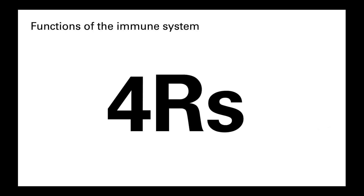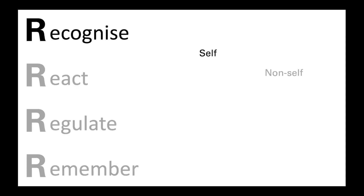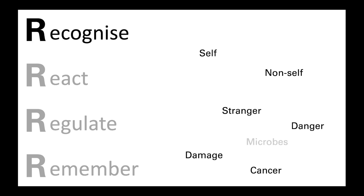The main functions of immune cells can be broadly divided into four distinct outcomes, which are the four R's: recognize, react, regulate, and remember. Recognize, because immune cells need to be able to distinguish between threats and non-threats, which is slightly more complicated than just determining whether a cell is self or non-self, although this is an important part of the process. Essentially the immune system needs to be able to distinguish between things that pose a threat to the body and those that do not, and respond accordingly.